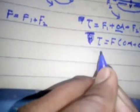So, torque is equal to - as we know that F equals F1 plus F2 - so we can say F times OA plus OB. So torque is equal to F times R.